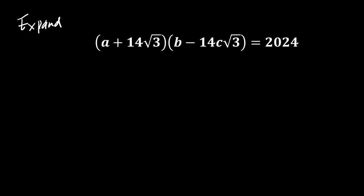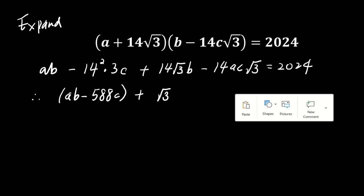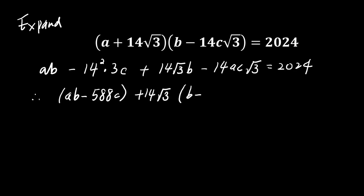The product of a plus 14 root 3 and b minus 14c root 3 equals a times b minus 14 squared times 3 times c plus 14 root 3 times b minus 14a times c times root 3. Simplifying gives a times b minus 588c plus 14 root 3 times open parenthesis b minus a times c close parenthesis.